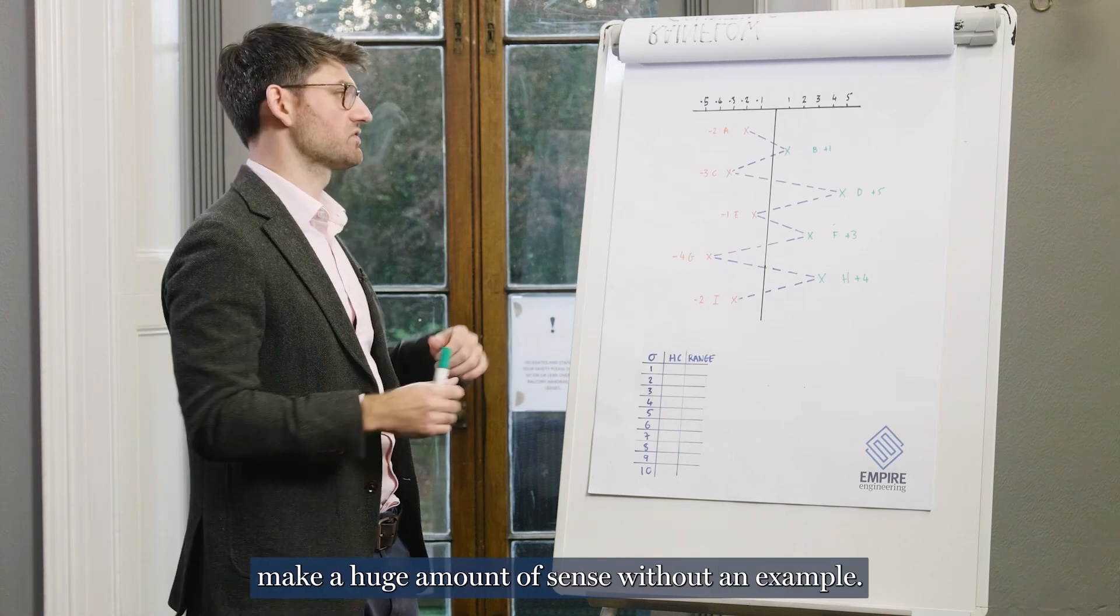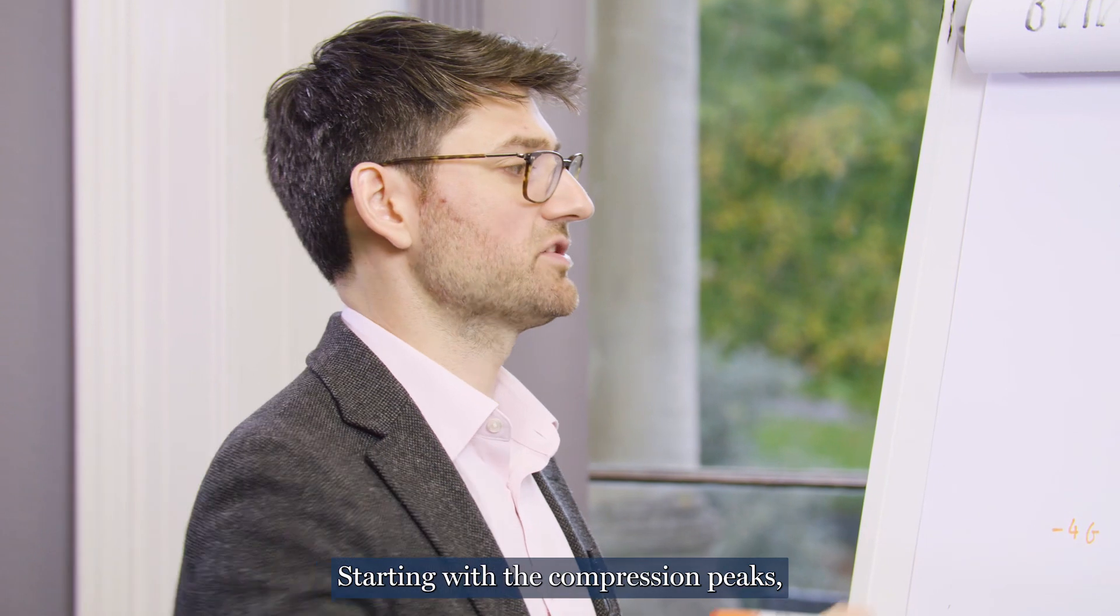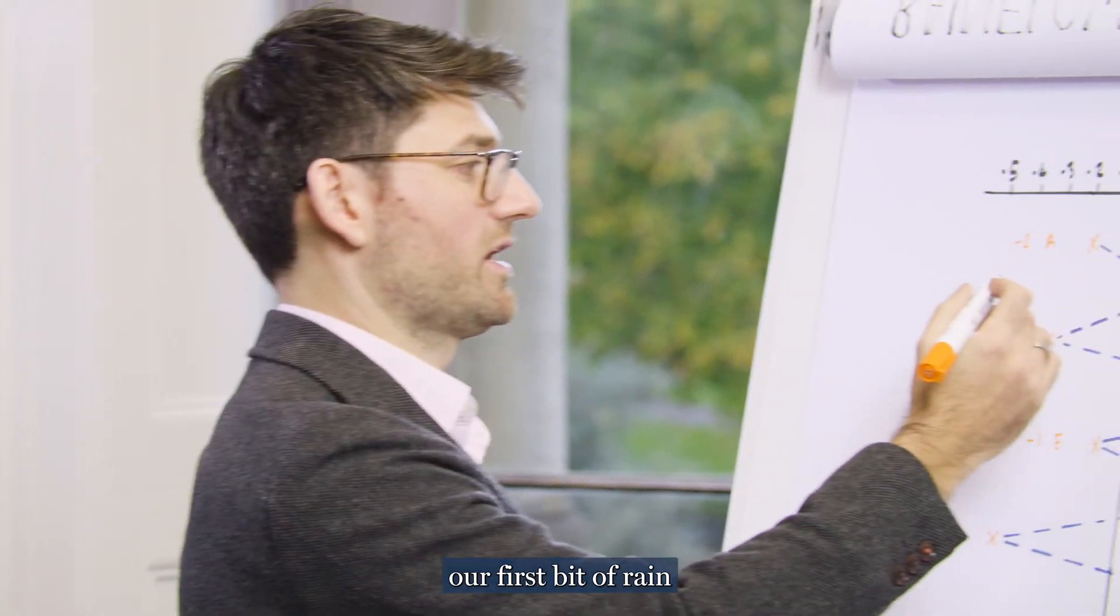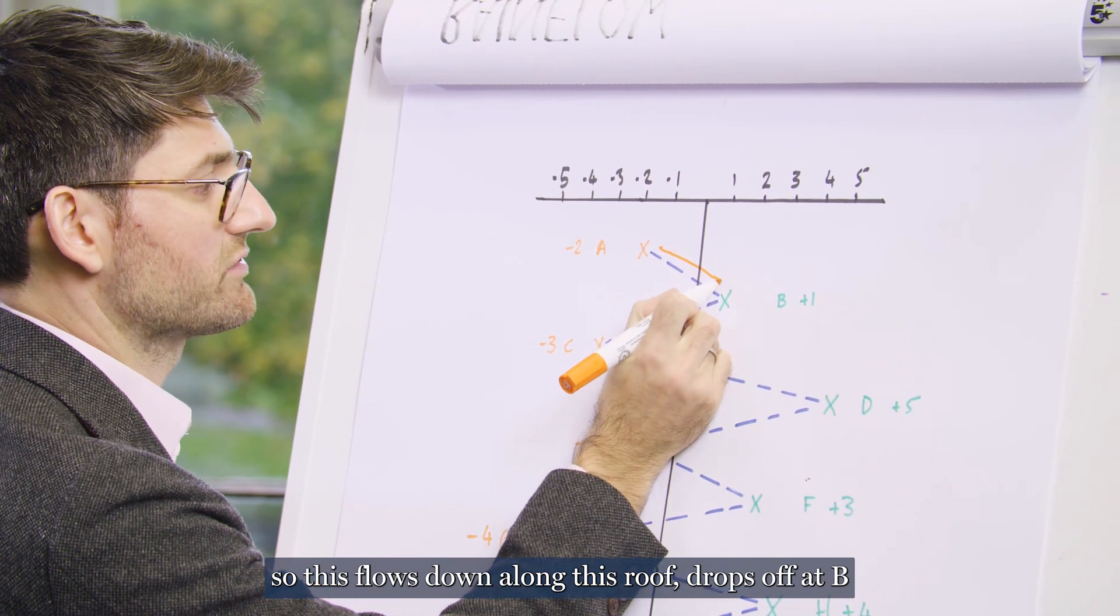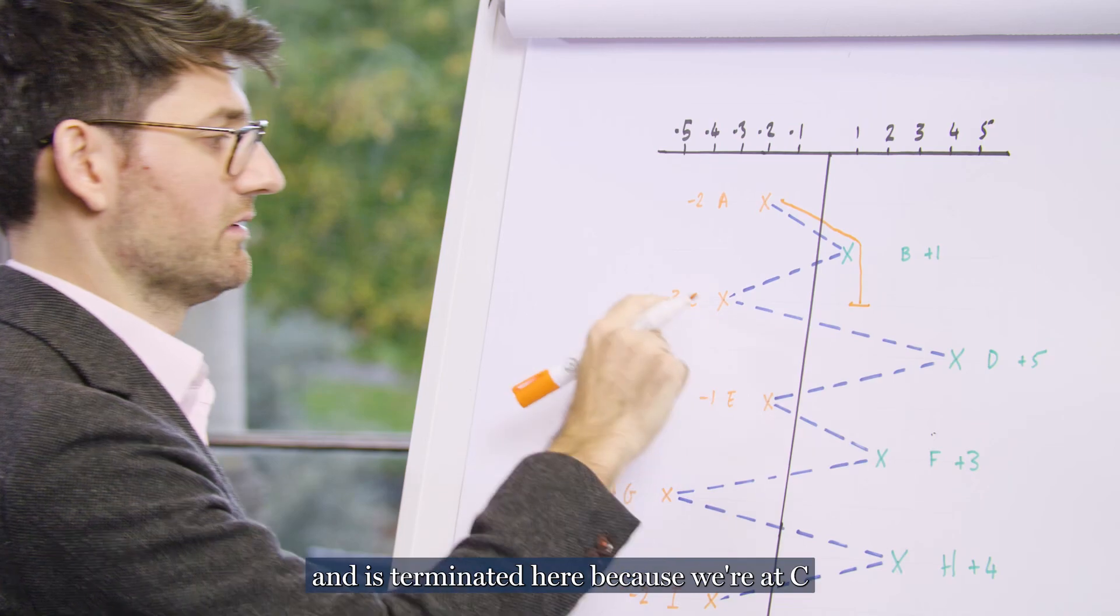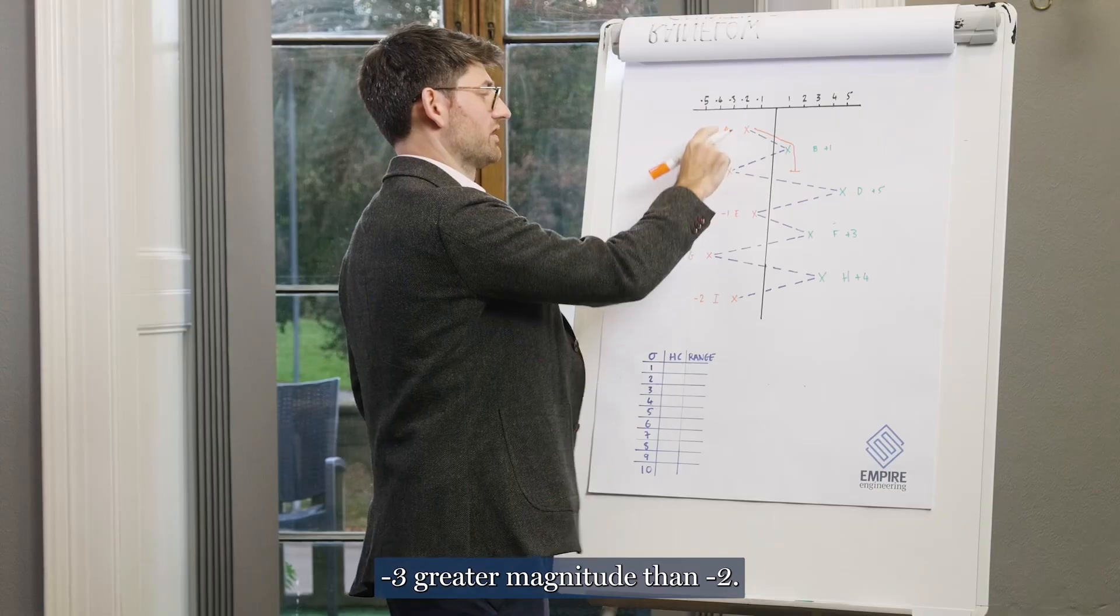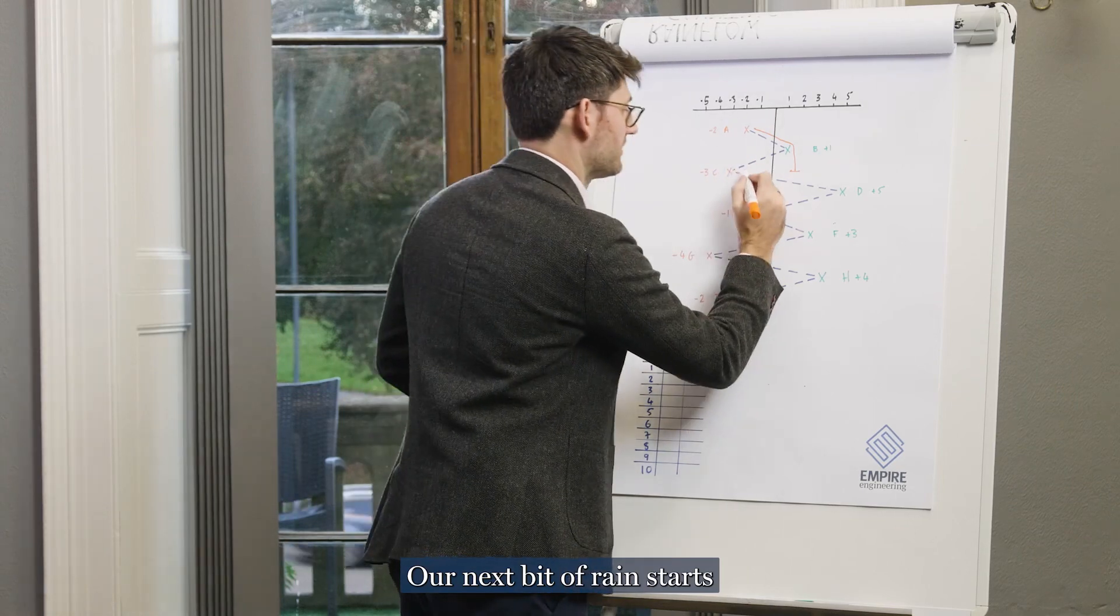Now that probably doesn't make a huge amount of sense without an example, so I'm going to talk through it now. Starting with the compression peaks, our first bit of rain initiates at point A. So this flows down along this roof, drops off at B and is terminated here because we're at C, minus three greater in magnitude than minus two.